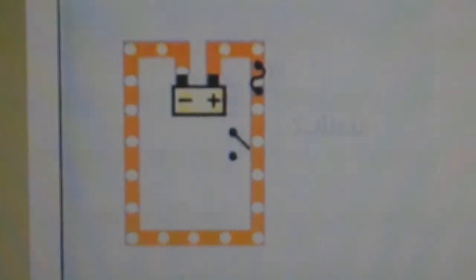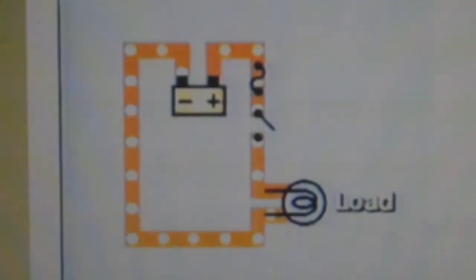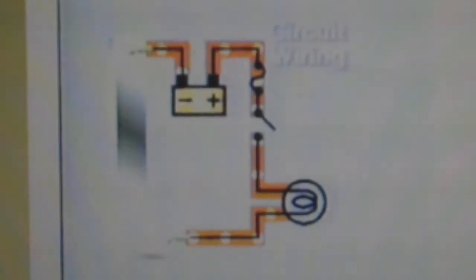Next is the load. Here we're using a light bulb, but it can be anything that requires electricity to work, such as the headlight, horn, starter motor, whatever. All loads have resistance. Usually a circuit has only one load per branch. Then we need a ground to the motorcycle's chassis, which is the link between the load and the negative terminal of the battery. Finally, there is the circuit wiring, which links all of these components together and carries the current flow.